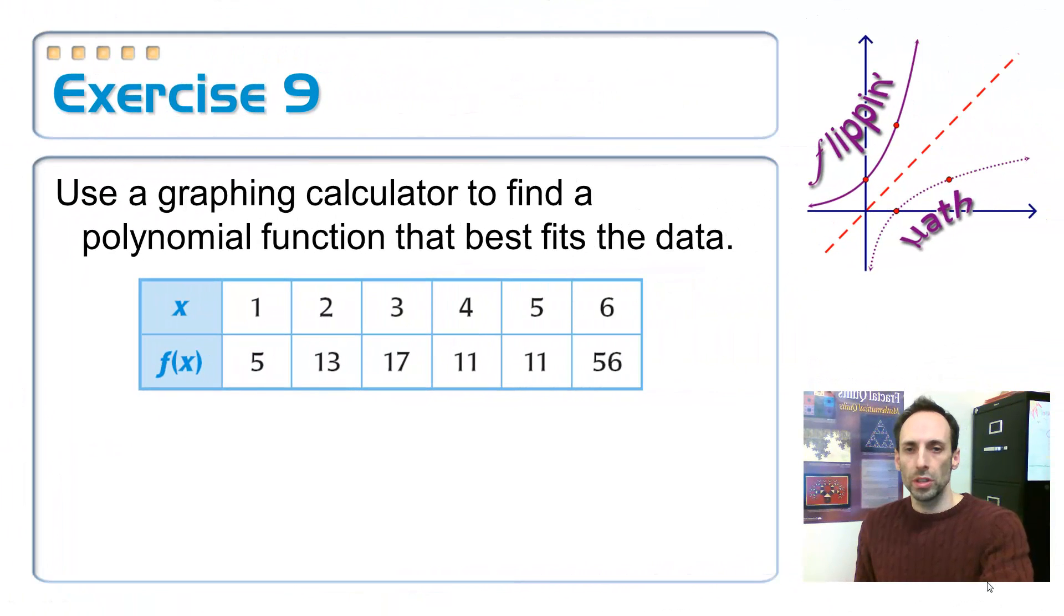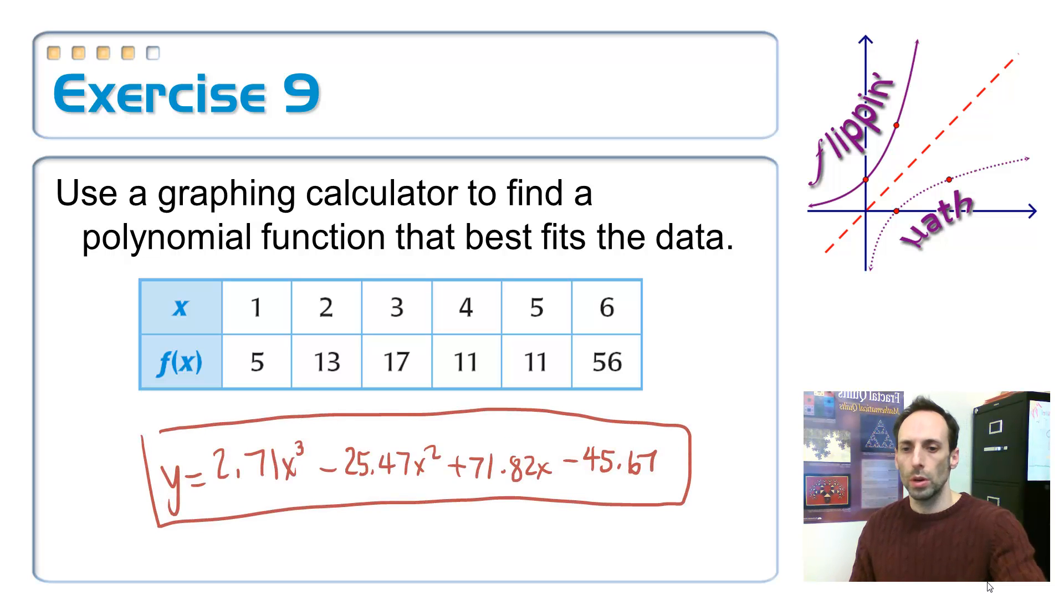Okay, so let's assume that you put all of this data into the calculator properly and you did your cubic regression on it. I think this is what you're supposed to have gotten. Right here. So y equals two point blah blah blah blah blah blah that equation right there. I don't want to read it off. You can take a look at it. Pause it if you need to.